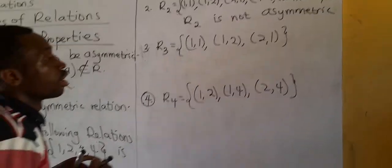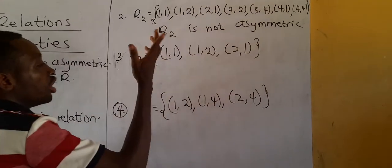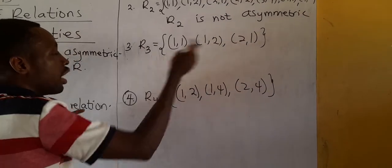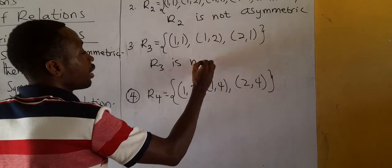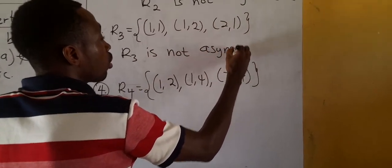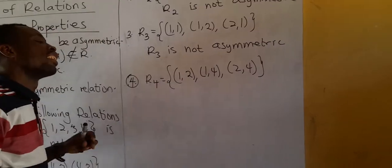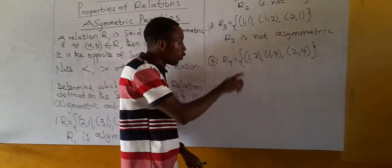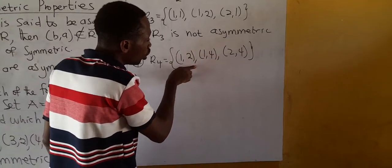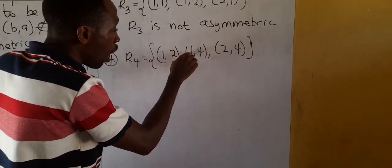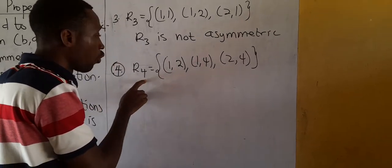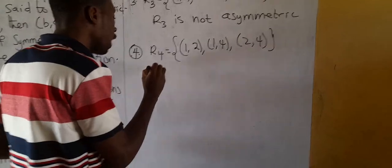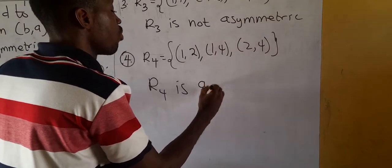For R3: there's a self-loop visible, which immediately disqualifies it from being asymmetric. Additionally, flip (1,2) → (2,1); it's a member — further confirming R3 is not asymmetric. For R4: flip (1,2) → (2,1); not a member, no problem. Flip (1,4) → (4,1); not a member. Flip (2,4) → (4,2); not a member. So R4 is asymmetric.